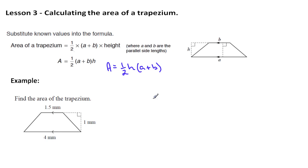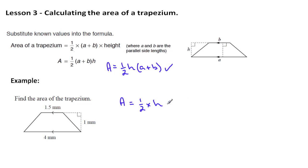Let's do an example and see how this works. Step number one is always write down the formula. I'm going to use this formula here: area is equal to half times the perpendicular height — that is the distance between the parallel sides — times the length of the parallel sides added together.